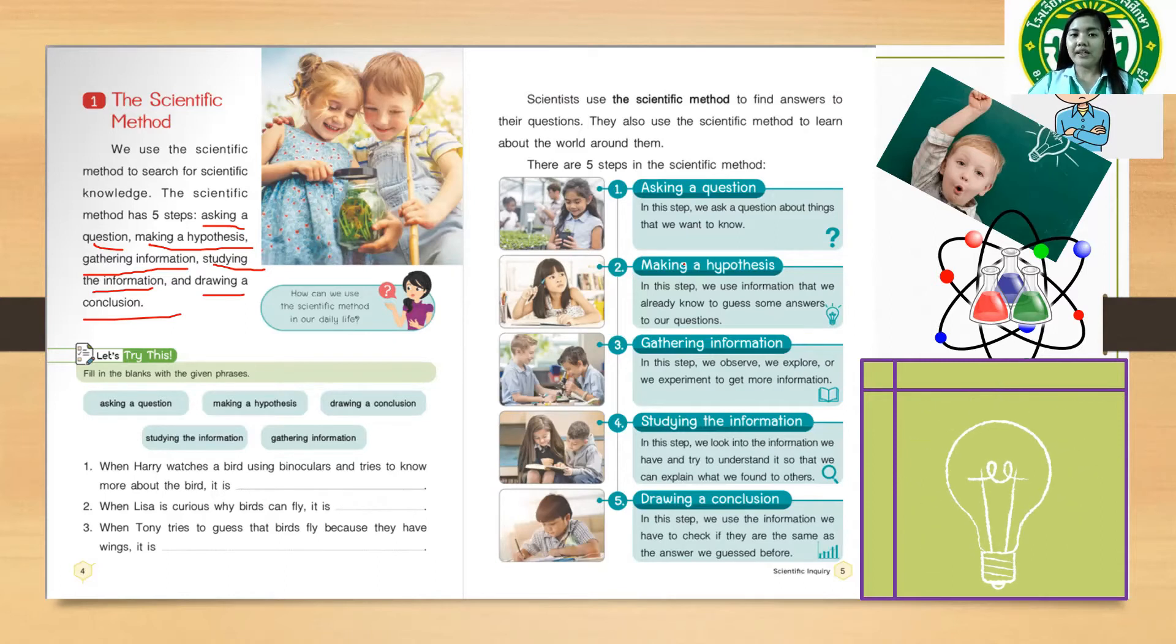Number two: making a hypothesis. In this step, we use information that we already know to get answers to our questions. Okay, so you can say, a red ant has a red body.